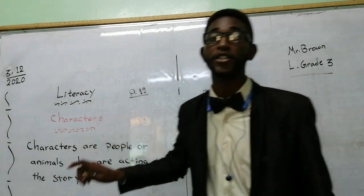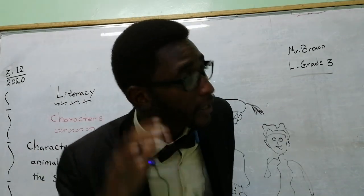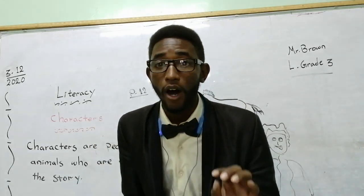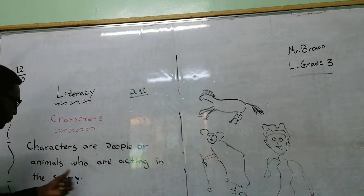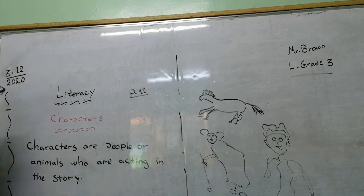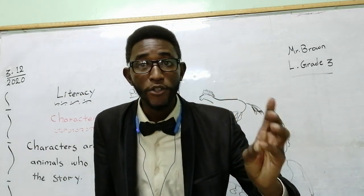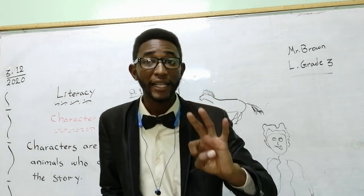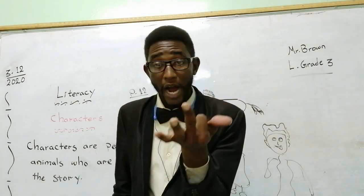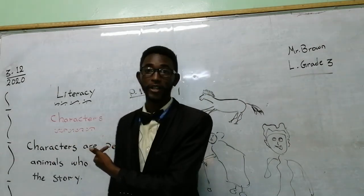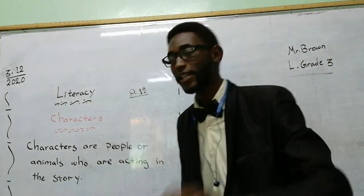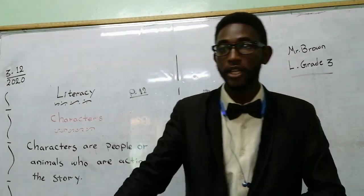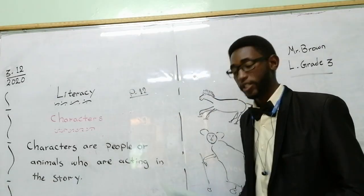Today we're going to talk about characters. Characters are people or animals who are acting in the story. This means characters are the names of people or animals in the story. For example, in the story of the three fat dancing cows, the three cows are characters. In the story of the little red hen, the hen is a character. Characters are people or animals who are talking or doing anything in the story.